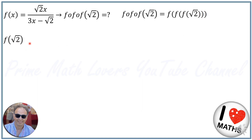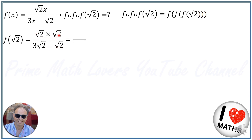To calculate f of √2, we replace x with √2. So we get √2 times √2 divided by 3√2 minus √2. We know that √2 times √2 equals 2, and 3√2 minus √2 equals 2√2. Canceling the 2s gives us f(√2) = 1/√2.